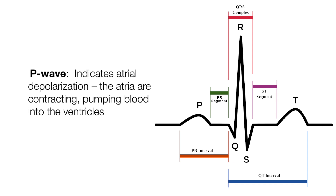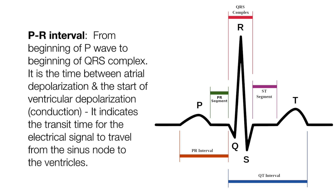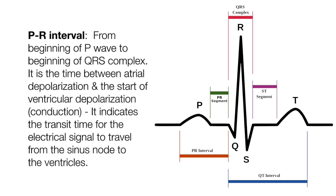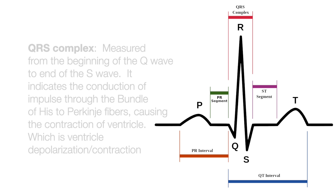Now we're going to look at a breakdown of the phases on an EKG tracing. The P wave indicates atrial depolarization — the atria are contracting, pumping blood into the ventricles. The PR interval is from the beginning of the P wave to the beginning of the QRS complex. It is the time between atrial depolarization and the start of ventricular depolarization, and indicates the transit time for the electrical signal to travel from the sinus node to the ventricles.